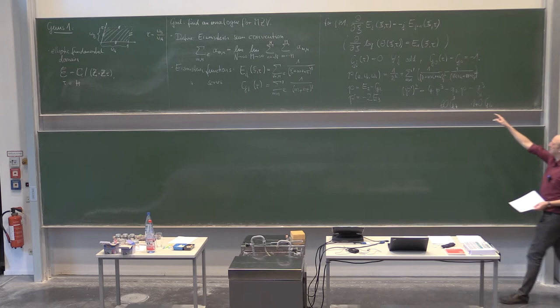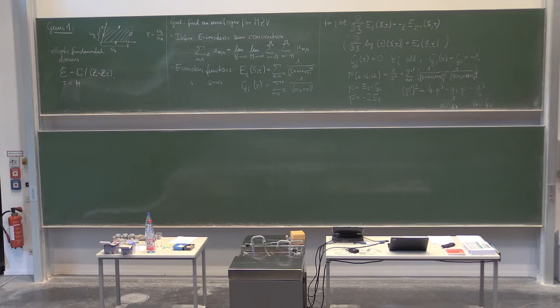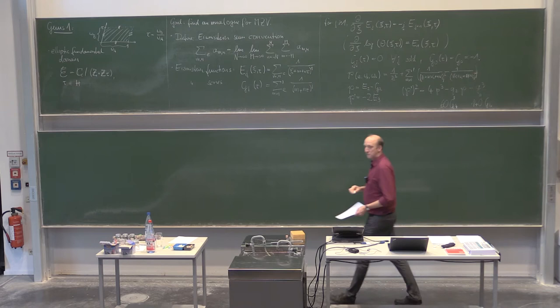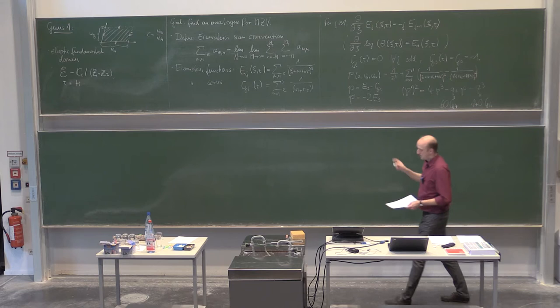Let us continue. First, there is a correction: I have been missing the squares in the definition of the Weierstrass p function, so please correct that. The second statement which was not correct was that you can express any elliptic function as a rational function in p and p prime. I said a polynomial — that's wrong. The statement is stronger: you can do it as a rational function.